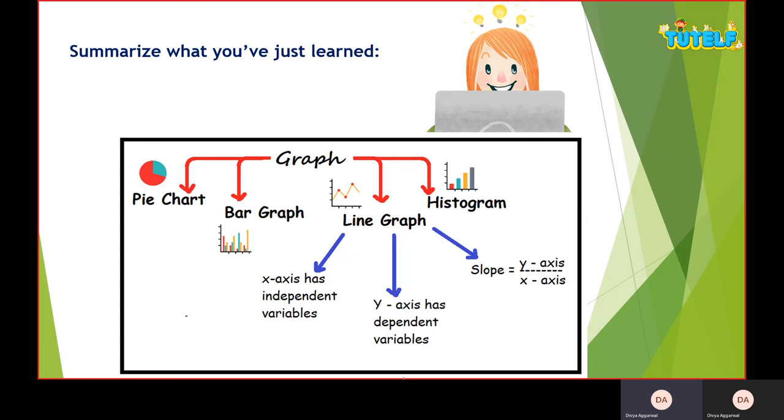Let's summarize what we have learned today. We have learned about four types of graphs: pie chart graph, bar graph, line graph, and histogram. For the motion chapter we will be focusing on the line graph. Line graph has x-axis which has independent variable and y-axis which has dependent variable.